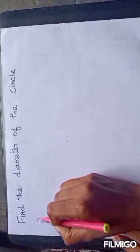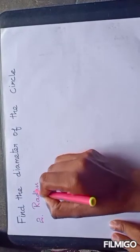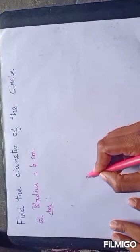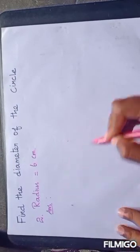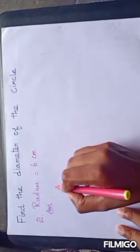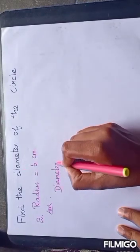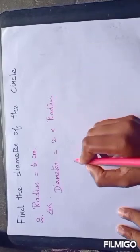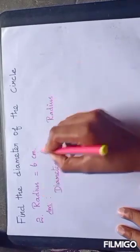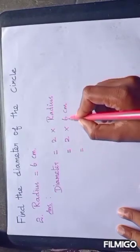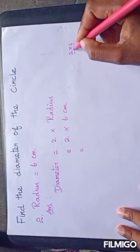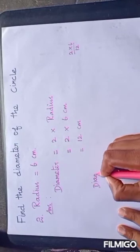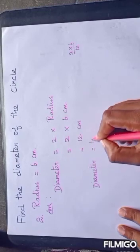Find the diameter. The radius is given, that is 6 cm. First we want to write the formula: diameter is equal to 2 times radius. Then substitute: 2 into 6. 2 sixes are 12. Therefore the diameter is equal to 12 cm.